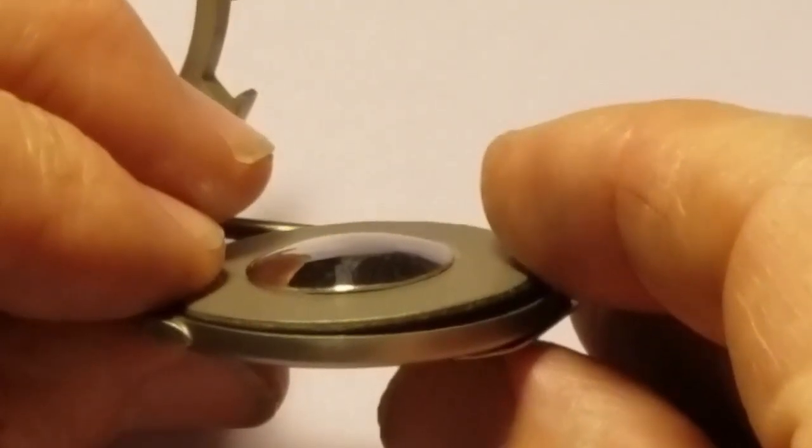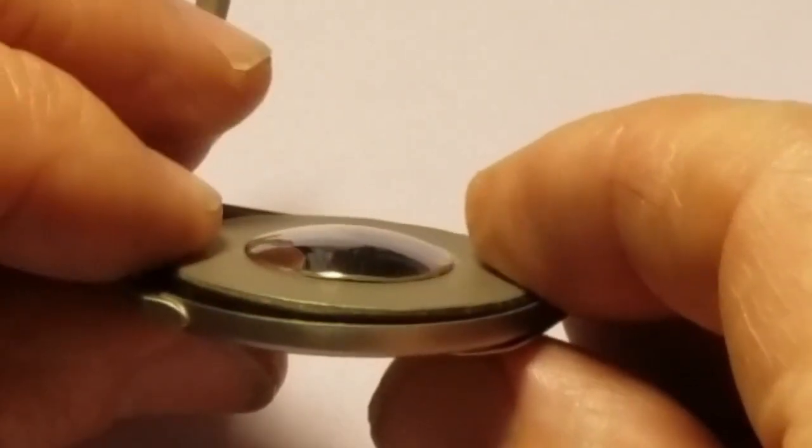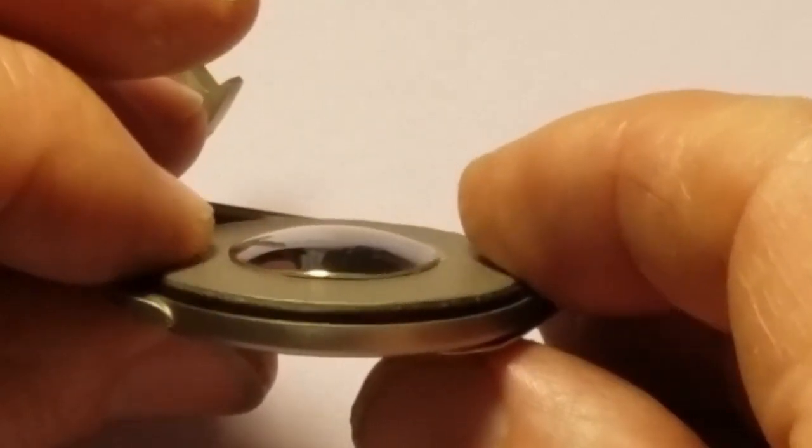This is the JS Self-Leveling Sax Pad. See how it tilts to align itself with the tone hole.